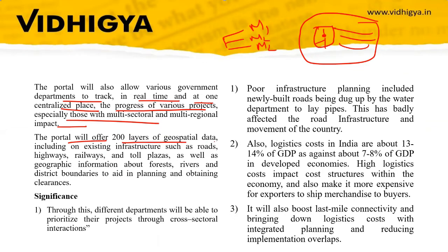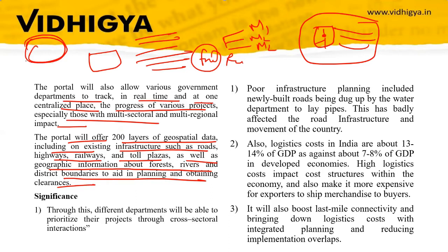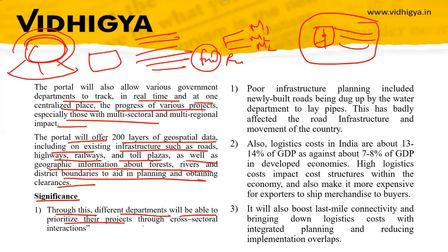The portal will offer 200 layers of geospatial data, including information on existing infrastructure such as roads, highways, railways, and toll plazas, as well as geographic information about forests and rivers. This portal will provide different information at one centralized space where ministries and different departments can coordinate as per the available data.